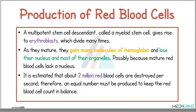Let's have a look at the production of the red blood cells. A multipotent stem cell descendant called the myeloid stem cell gives rise to erythroblasts. These erythroblasts divide many times, and as they mature, they gain molecules of hemoglobin and lose their nucleus and most of the organelles. It is estimated that about two million red blood cells are destroyed per second, so an equal number must be produced to keep the red blood cell count in balance.